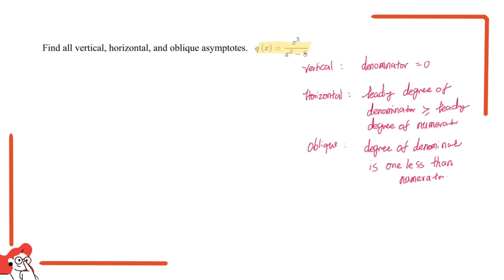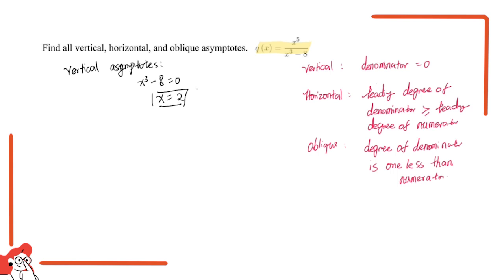Now let's use this information to check if there are these three asymptotes. For vertical asymptotes, they occur when the denominator equals zero, so we set x cubed minus eight equal to zero and we get x equals two. So when x equals two, a vertical asymptote occurs.